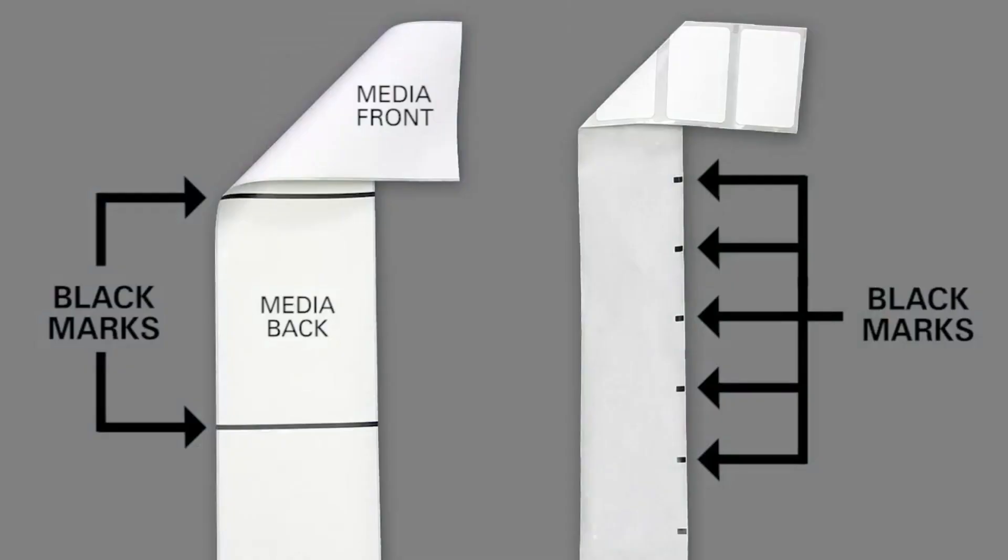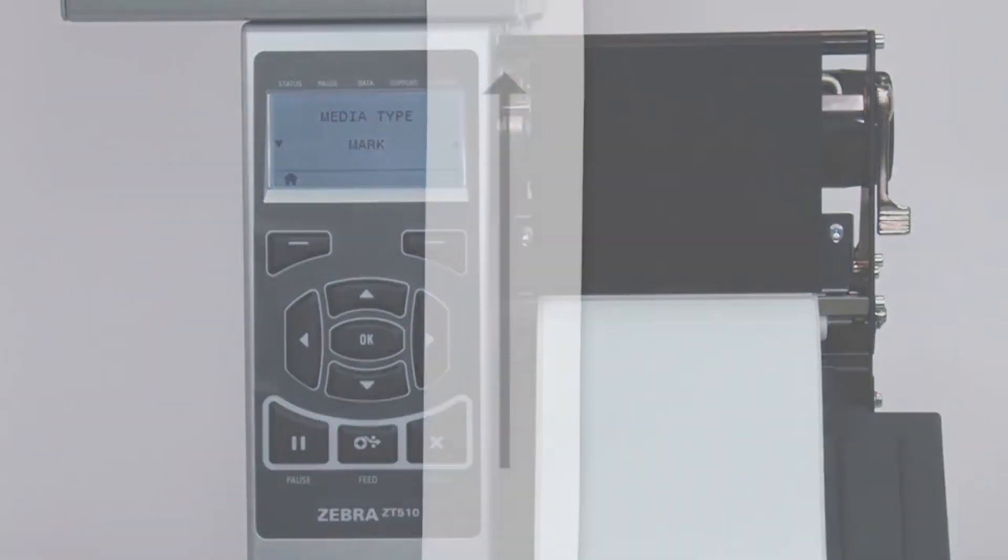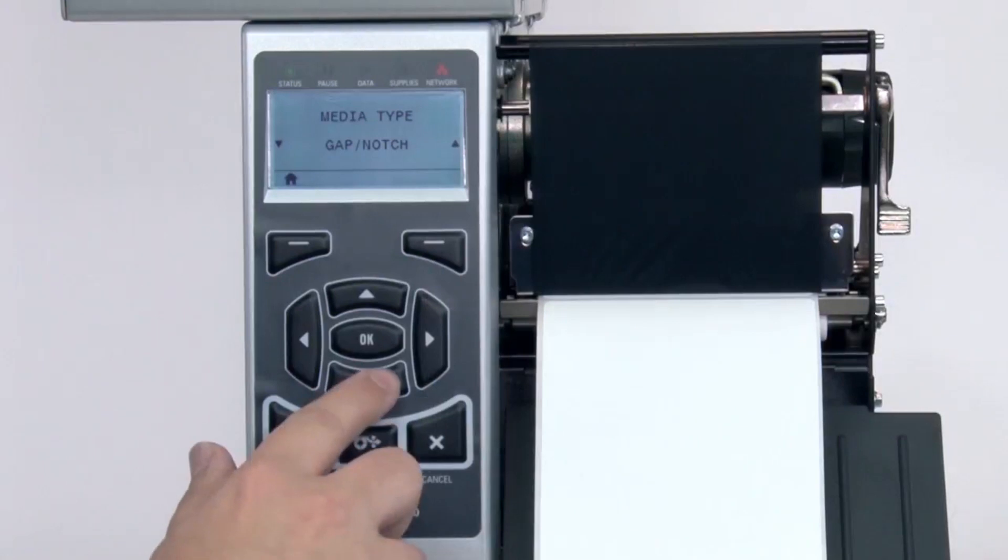If your media has a black mark on the underside of the media, select Mark in the menu. If your media is a continuous roll with no start position features, select Continuous in the menu.